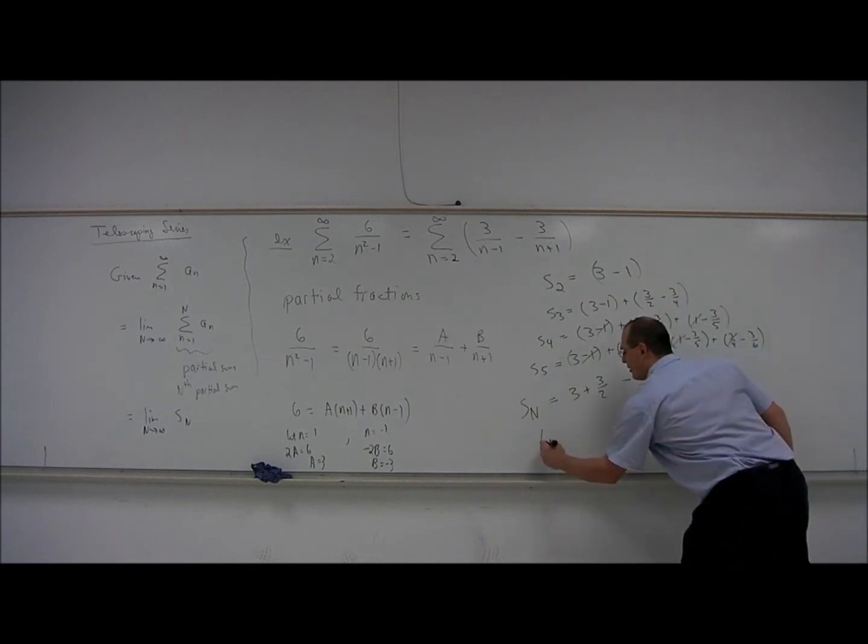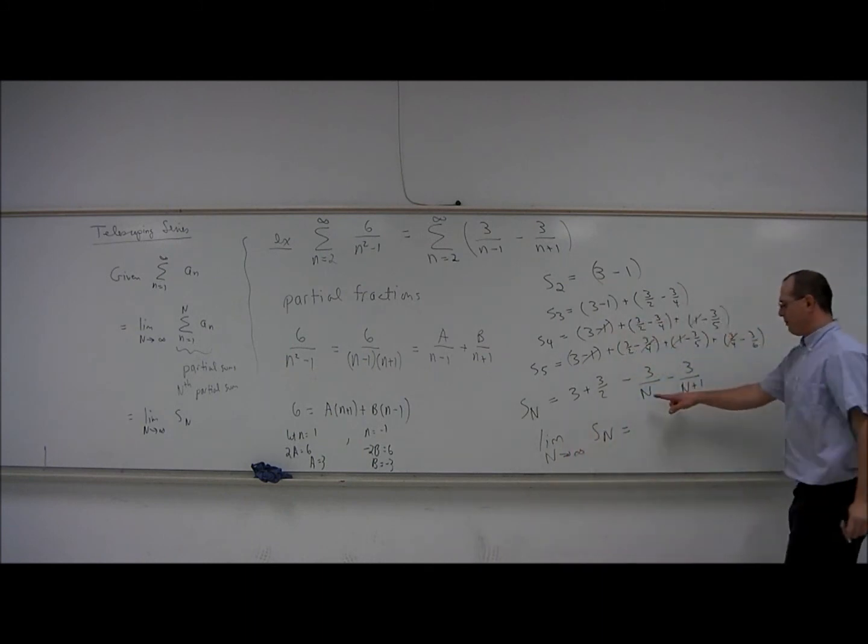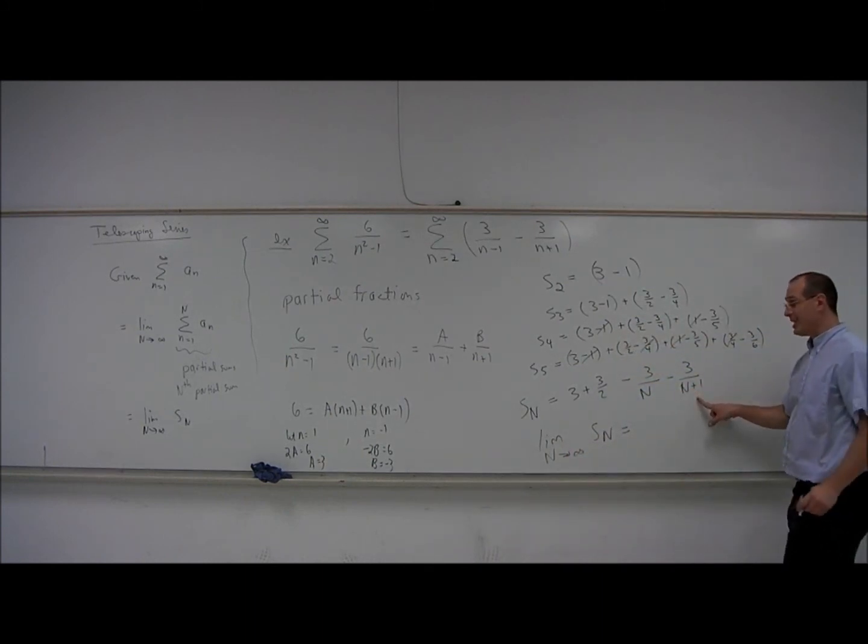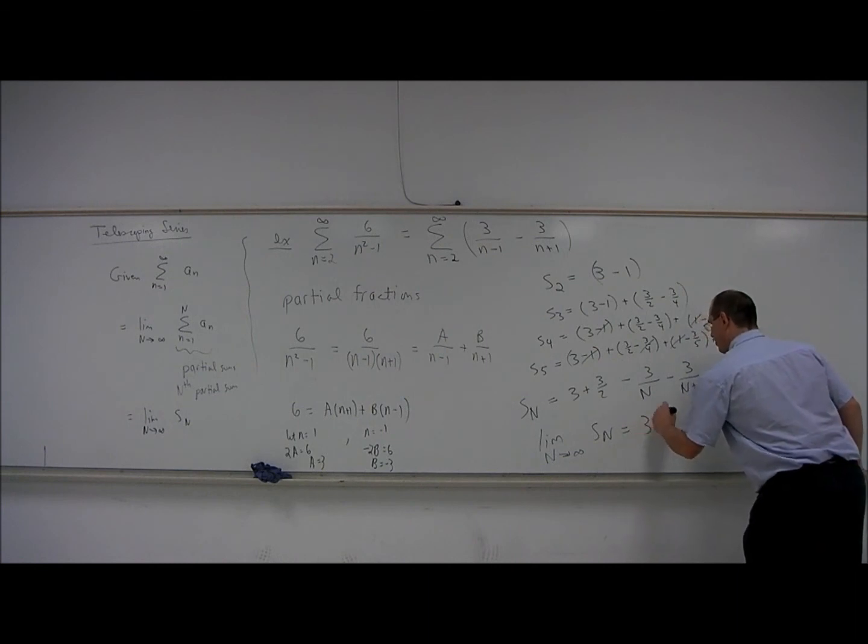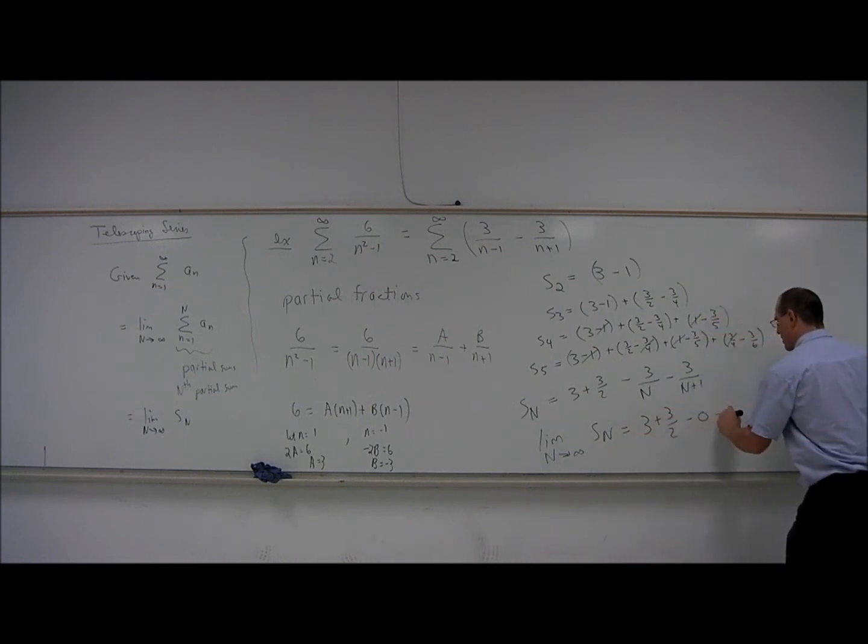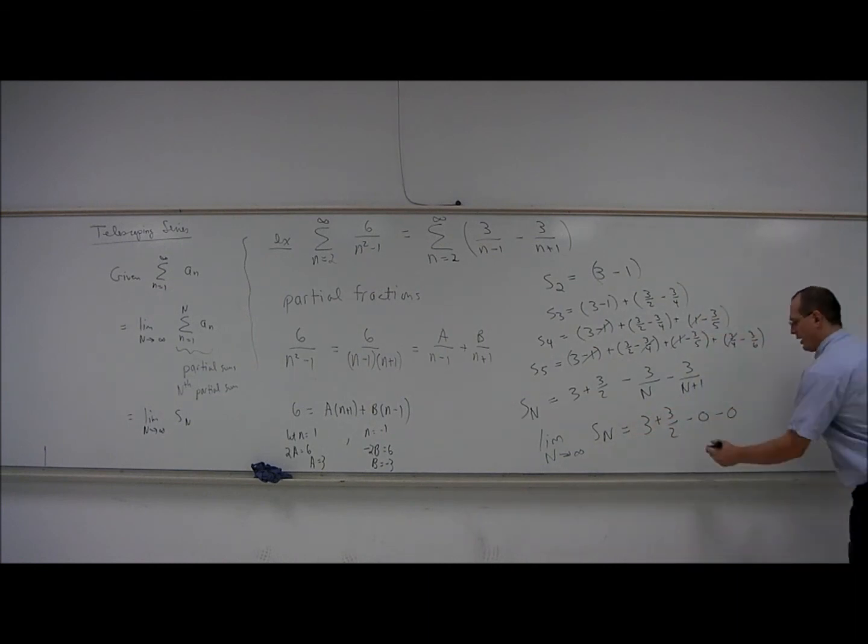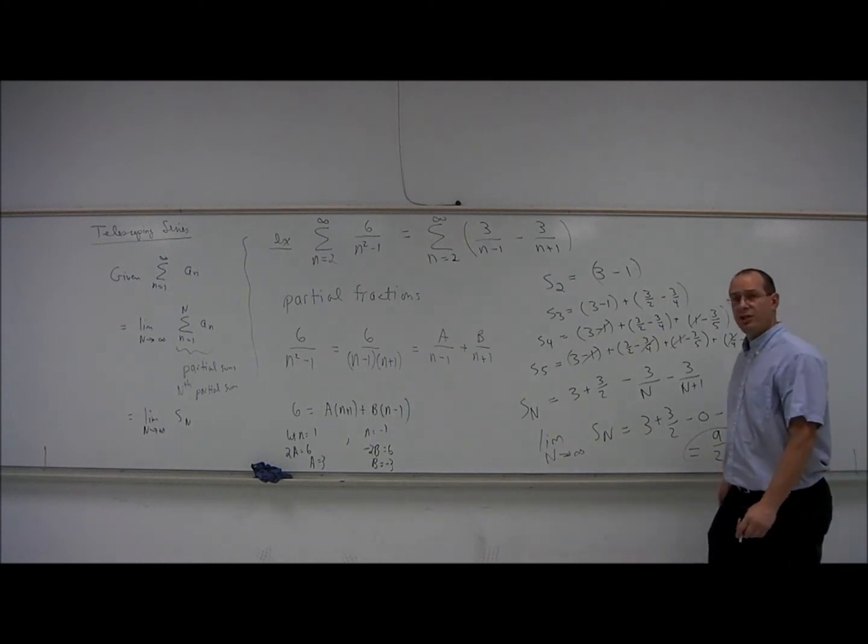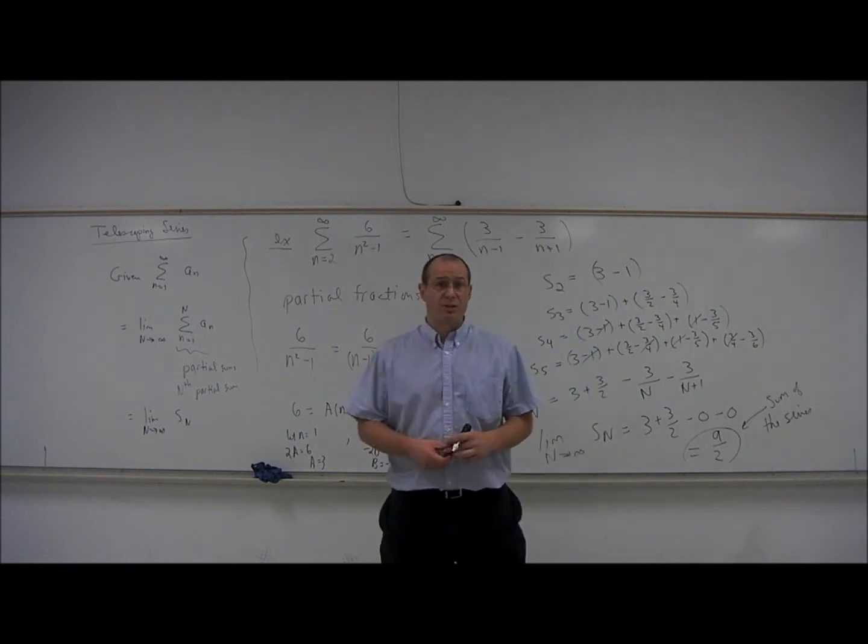Now if we take the limit as capital N goes to infinity of S sub n, both of these fractions are going to zero, and we get 3 plus 3 halves. I'll emphasize that those are zero, and so the answer here is 9 halves. So the series converges and the sum of the series is 9 halves. The series converges and it adds up to 9 halves.